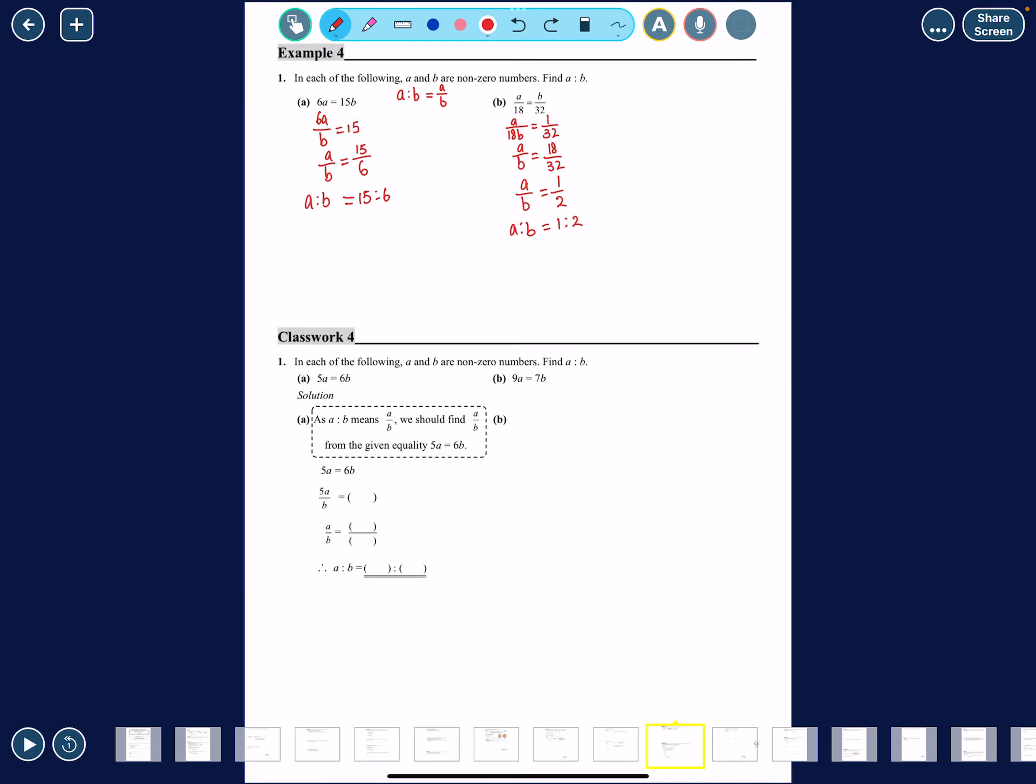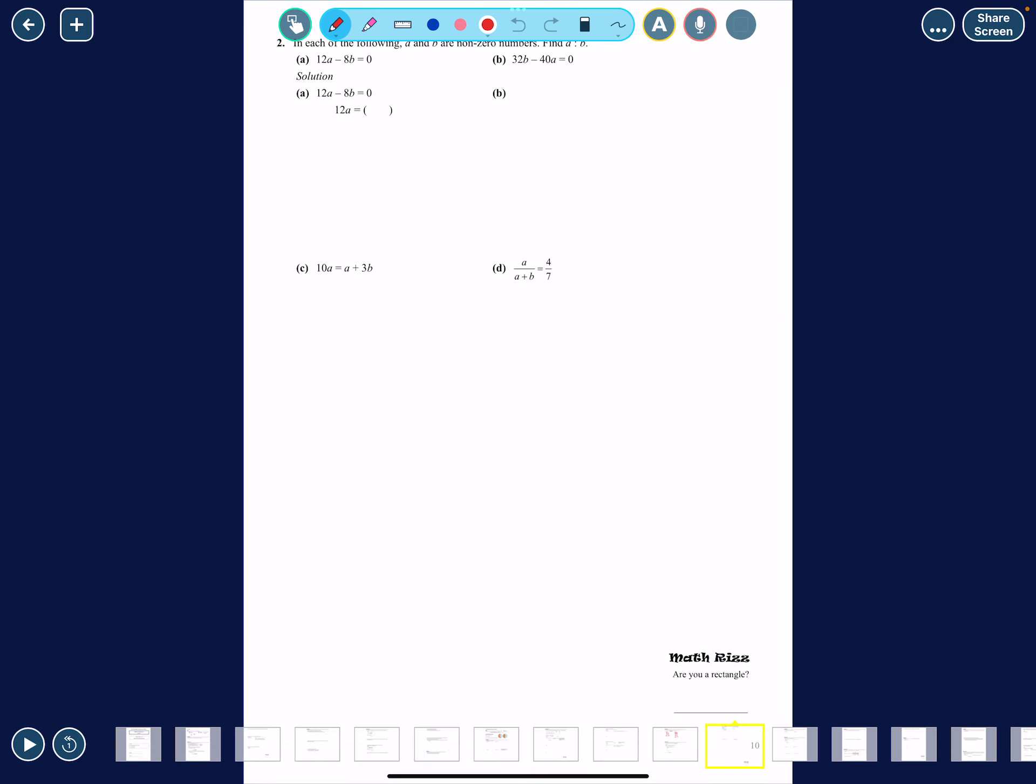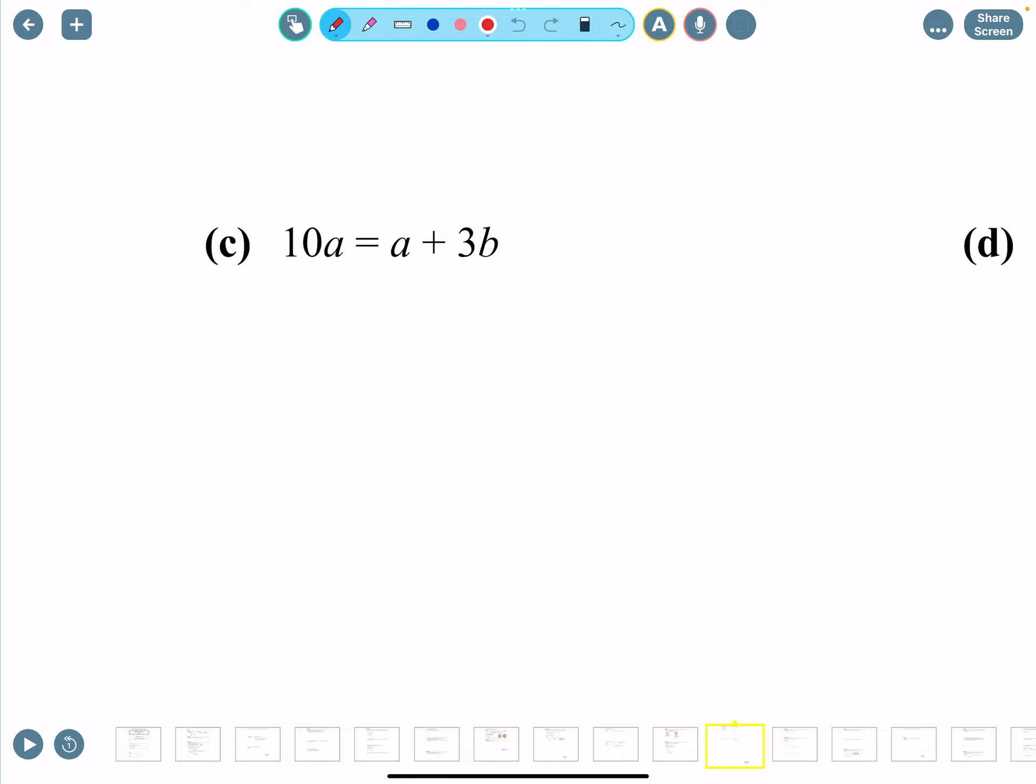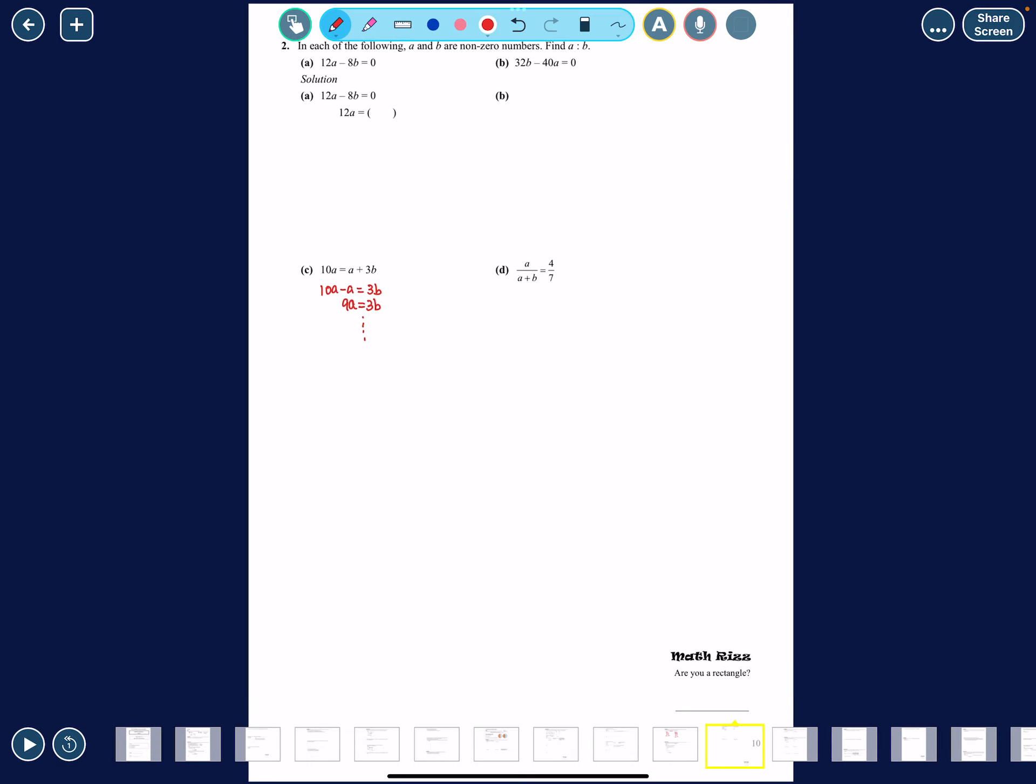So yeah, mostly more or less the same. Let's just move on to these, are more complicated ones. So over here you want to combine all the a's together first, so there you have single a, 10a minus a equals to 3b. So you have 9a equals to 3b and then you continue from there. Okay, that's the only new thing there.